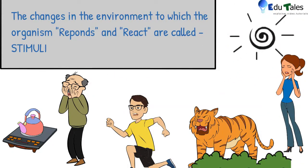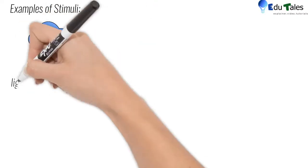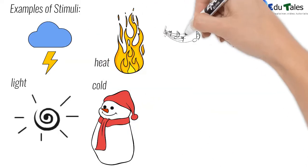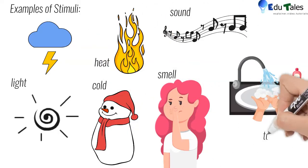The stimuli can be of different types such as light, heat, cold, sound, smell, touch, water, gravity, etc.